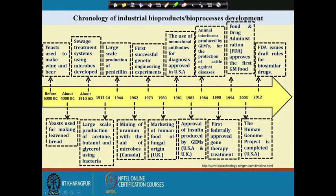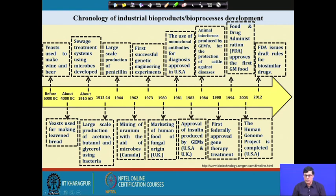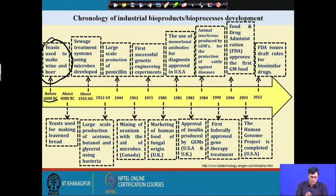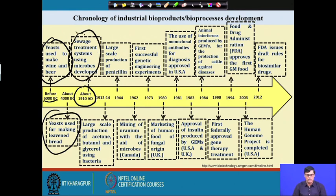The chronological development of bioproducts is interesting. Around 6000 BC, yeast was used to make wine and beer — the startup of bioproducts. By 4000 BC, yeast was used for making leavened bread. Then in 1910 AD, biological processes for waste treatment using microbes were developed.